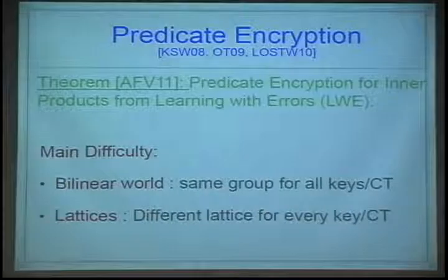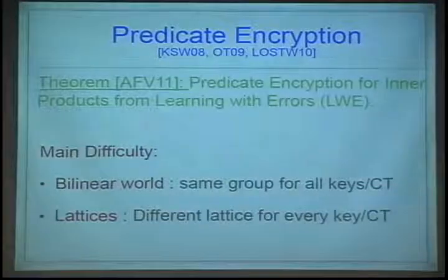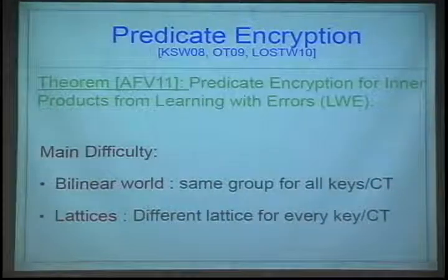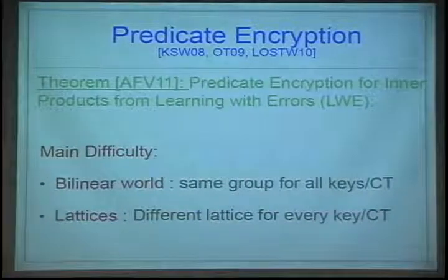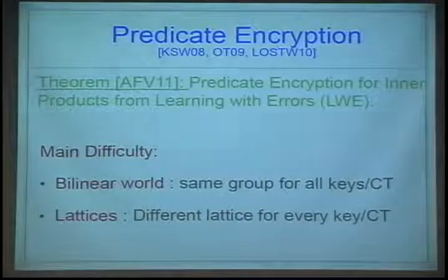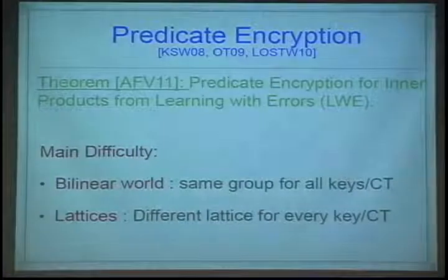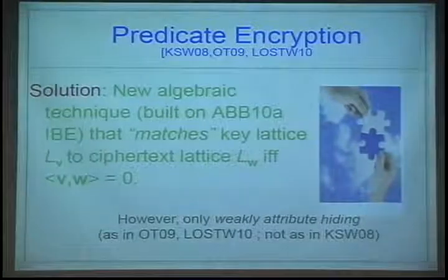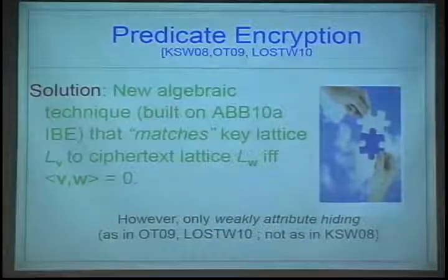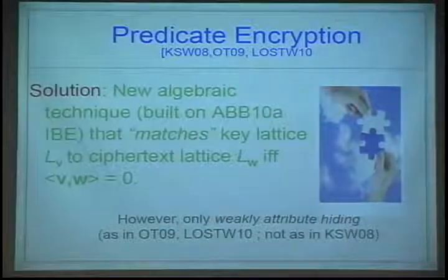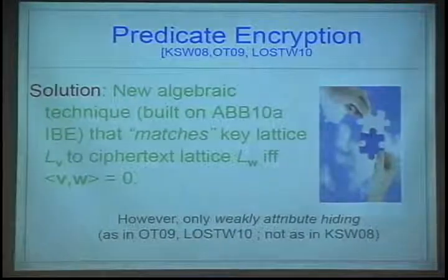The theorem that we have is that we get predicate encryption for inner products from the learning with errors problem. The main difficulty we had in this construction was that ideas from the bilinear world did not translate. In the bilinear world, you have the same group for all keys and ciphertexts, whereas in the lattice world, for every key and ciphertext, you have a different lattice — so there's a matching problem. We solve this problem by introducing a new algebraic technique that builds on the ABB10 AIBE construction. This technique matches the key lattice and the ciphertext lattice exactly when the decryption condition holds, and then you can pair them together and decrypt.